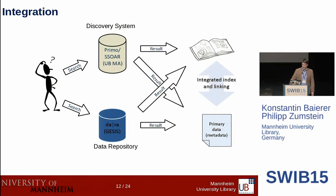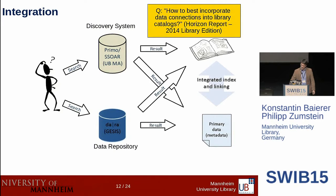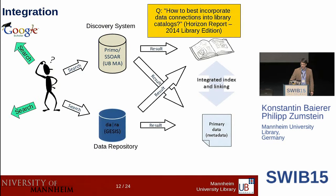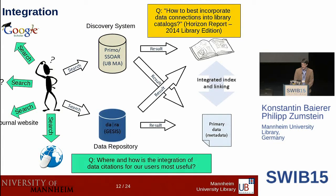The users are not only searching in discovery systems and data repositories, but also in other systems — a question from the Horizon Report 2014 Library Edition asks: how to best incorporate data connections into library catalogs? Users also search in Google Scholar, on journal websites, or anywhere on the web. So it's a good question to ask: where and how is the integration of data citation most useful for our users? There are a lot of different systems we would like to cover in this integration, and therefore we need a really flexible infrastructure.